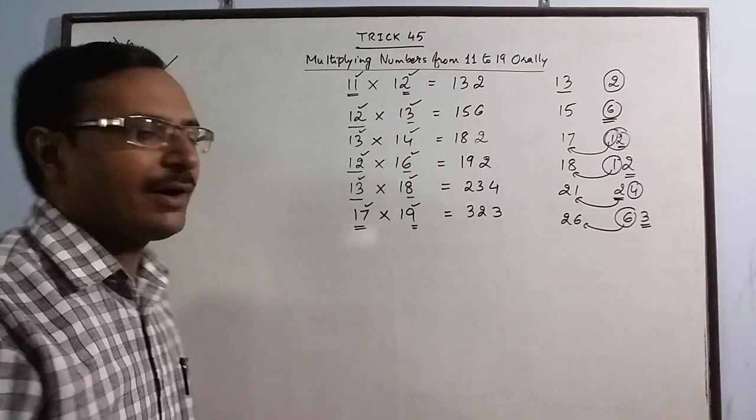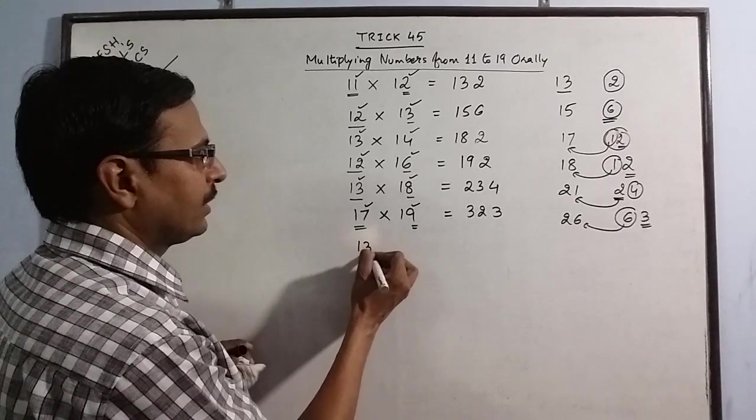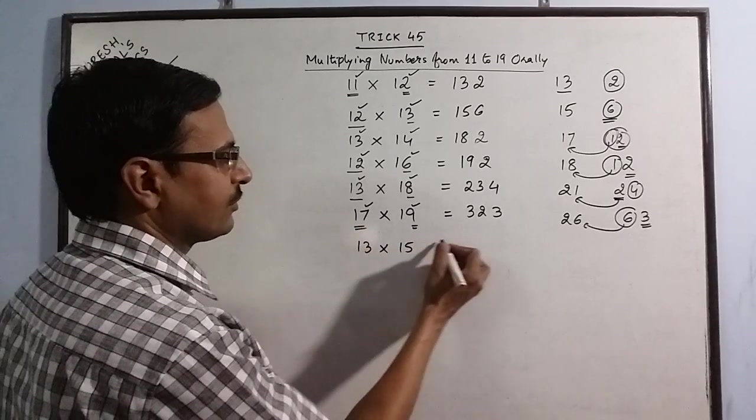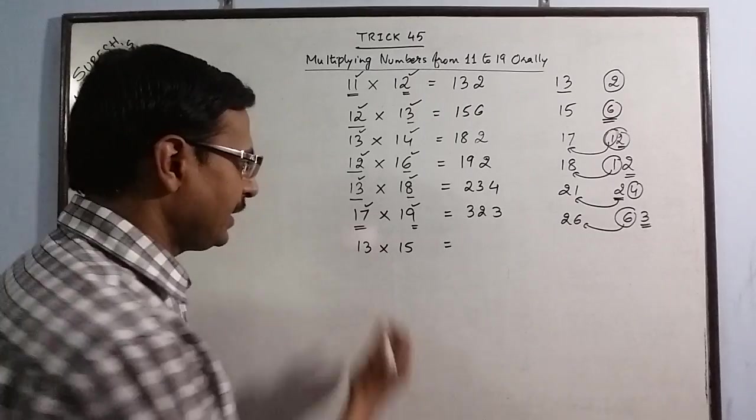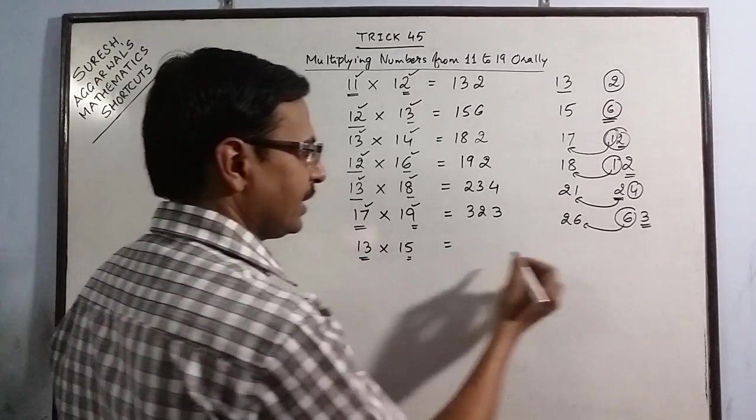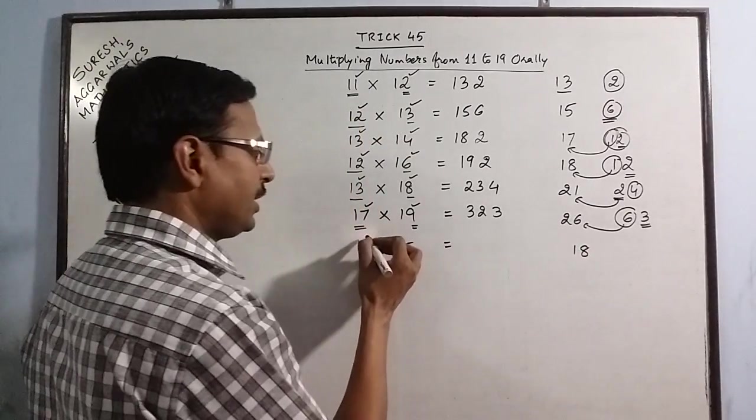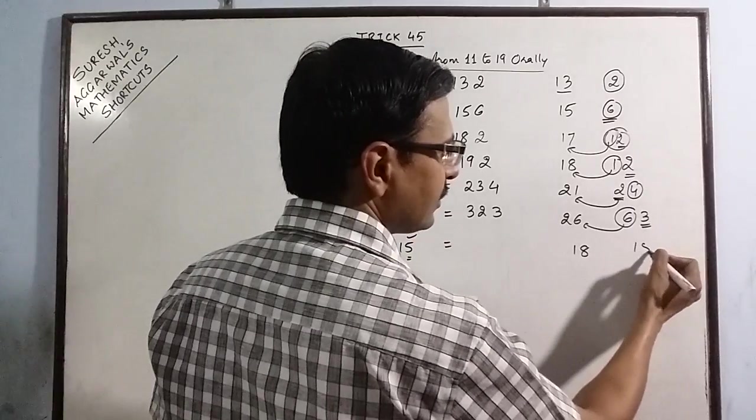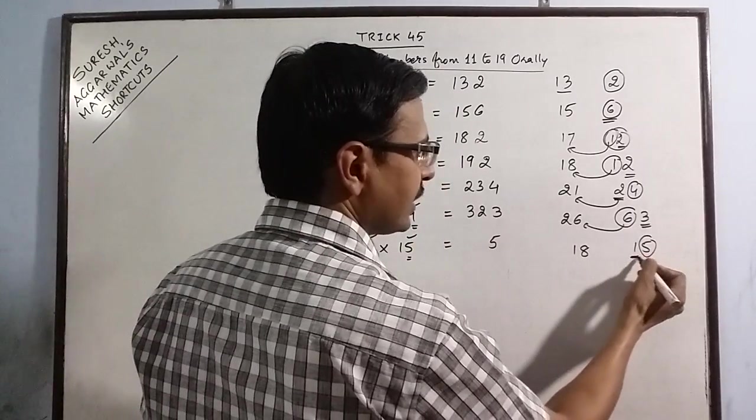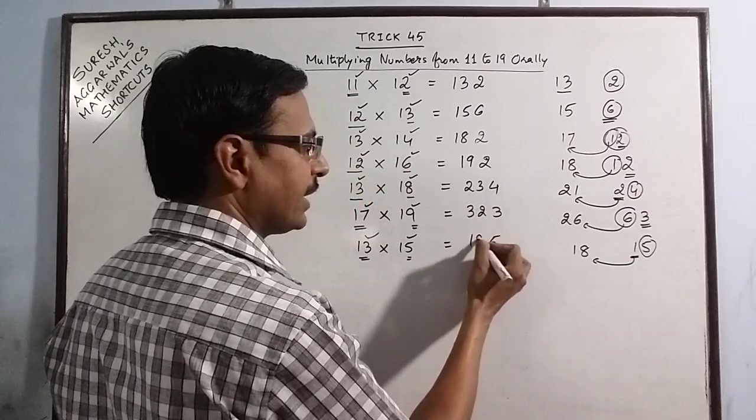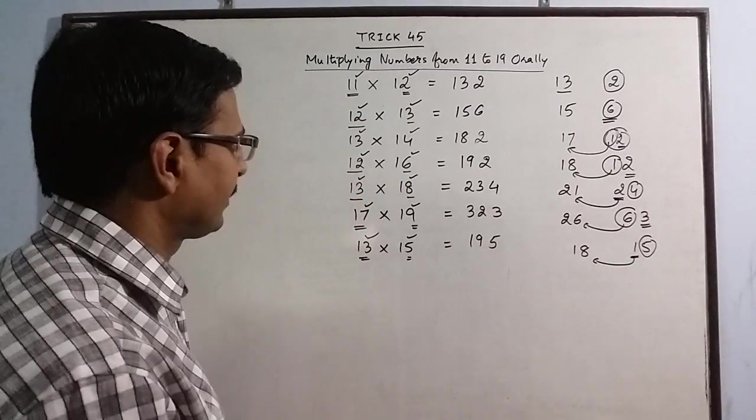Simultaneously you can have number of products and you can get all those products verbally. 13 plus 5 is 18. 3 into 5 is 15. So 5 is to be retained as it is and this 1 is to be added here. So 195 is the product.